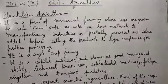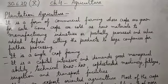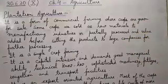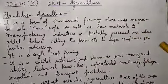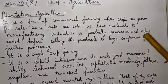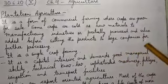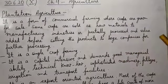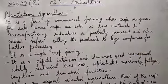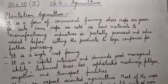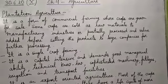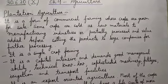Plantation agriculture is a form of industrialized agriculture, and a form of commercial farming where crops are grown mainly for sale — that is the main objective. Some crops are sold as raw materials to manufacturing industries, or partially processed and value-added before selling to large companies for further processing. Therefore, it is a form of industrialized agriculture where raw materials are sent to industries for processing.